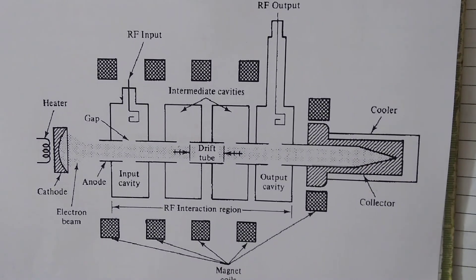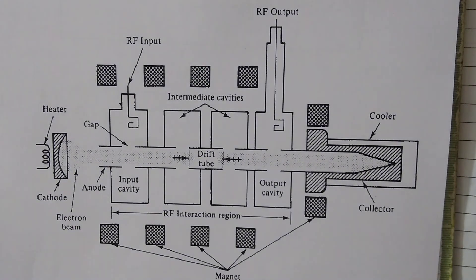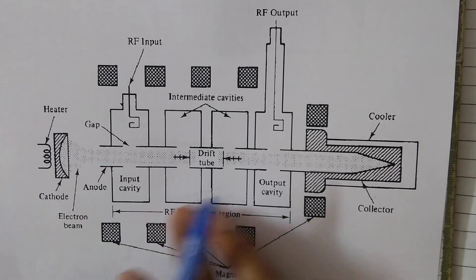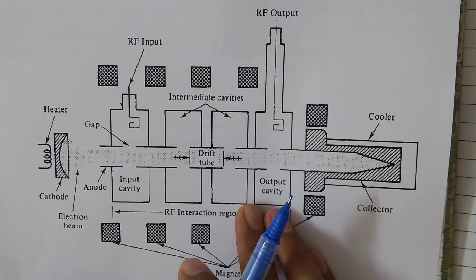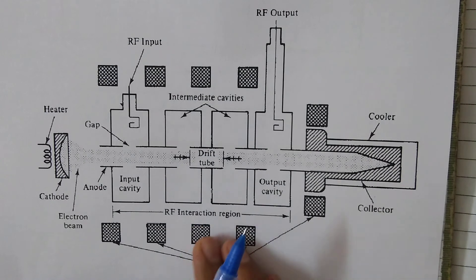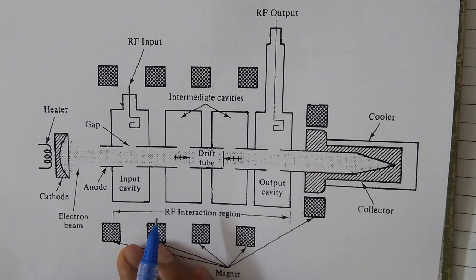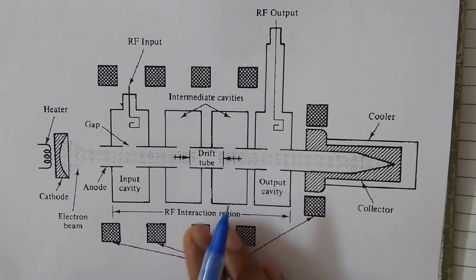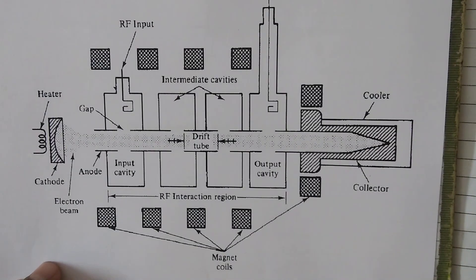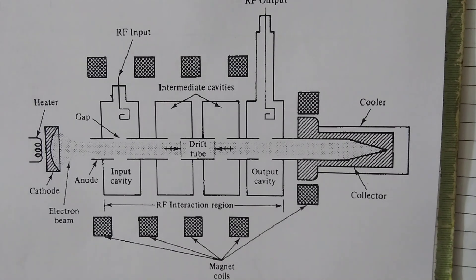So this covers the multi-cavity klystron amplifier. We are not explaining the details about velocity modulation, bunching process, and optimum distance because we already discussed these for the two-cavity klystron amplifier, and most of that discussion applies to the multi-cavity klystron tube. Thank you.